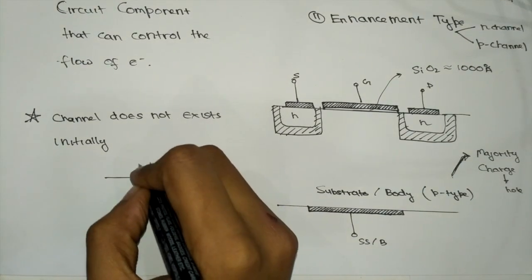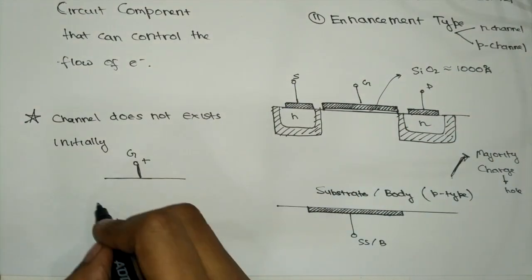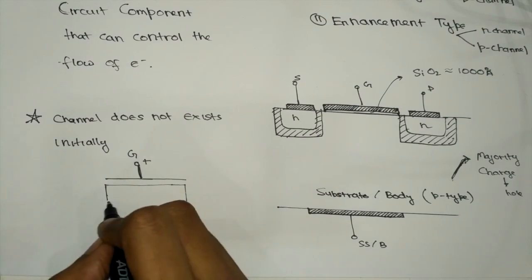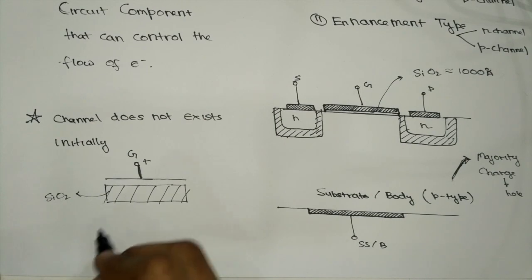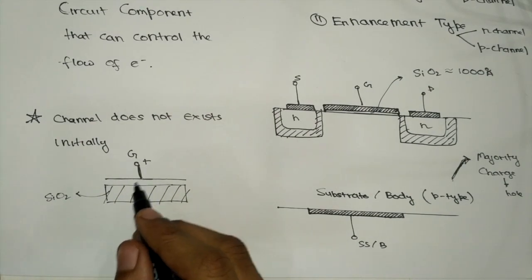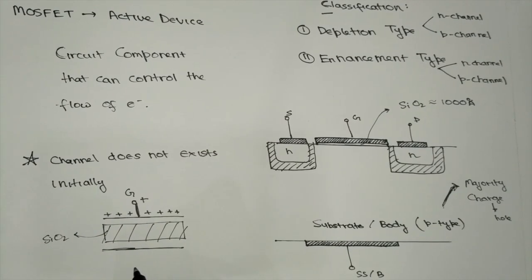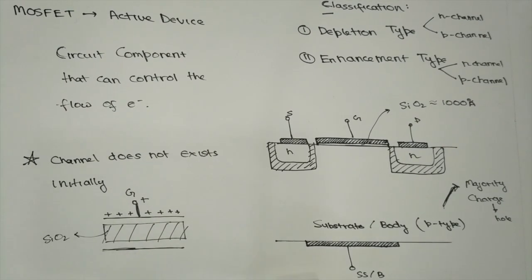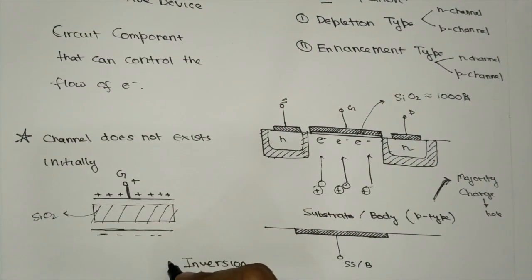We provide a positive potential at the gate terminal. The SiO₂ layer acts as the dielectric. Since a positive charge is induced at the gate, it attracts negative charges towards it. When VGS is increased, since this is a P-type region, it has minority charge carriers — that is, electrons. These electrons get accumulated near the gate terminal. This process is known as inversion: the process in which a P-type region is converted into an N-type region by applying a certain potential to it.